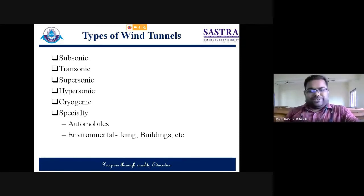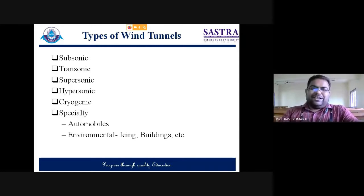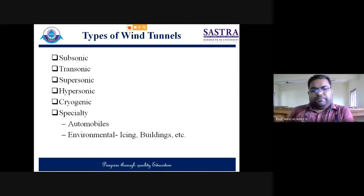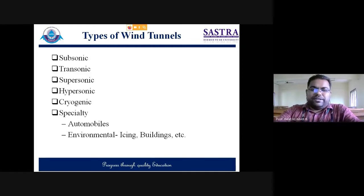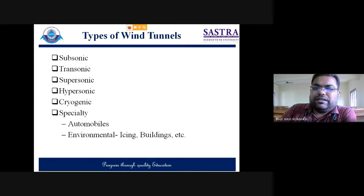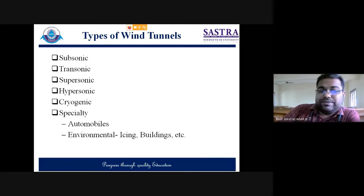Based on airflow velocity in the test section, tunnels can be classified into various categories. A subsonic wind tunnel has a test section velocity less than Mach 1, but practically we consider test section velocity less than 0.9 Mach as subsonic. Transonic range is between 0.8 and 1.8 Mach. Supersonic is beyond 1.5 Mach — anything up to Mach 2 or 2.5. Hypersonic is greater than Mach 5.